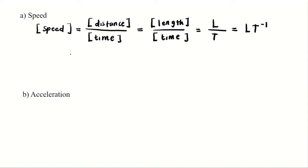At the final step, we have bracket of length over time. We know that length can be denoted as capital L and time as capital T. So the final answer will be L T to the negative one, and from this dimension we can find the unit for speed, which is meter per second.